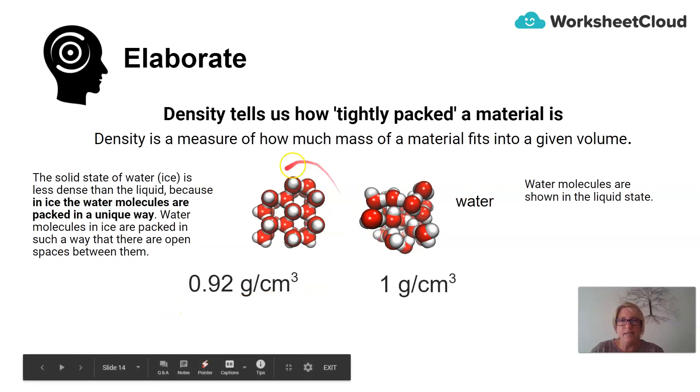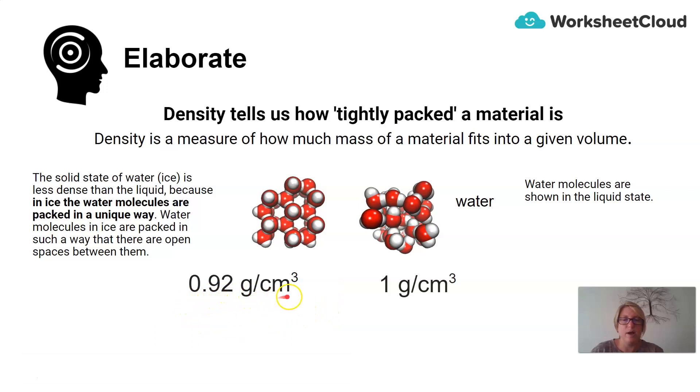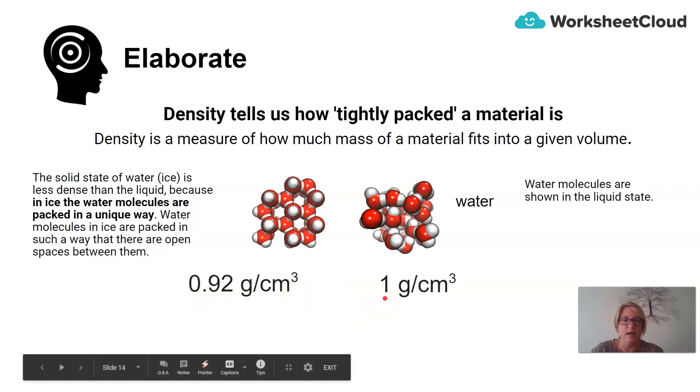The density of ice is 0.92 grams per centimeter cubed and the density of water is 1 gram per centimeter cubed. Therefore, when we have a glass of water, we would expect the ice, which is less dense than liquid, to float.